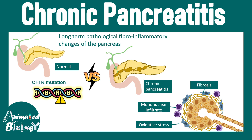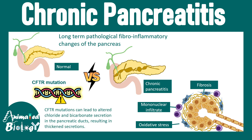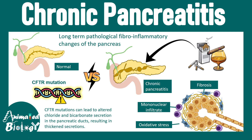There are also genetic components underlying chronic pancreatitis. One of the most common factors is the CFTR gene mutation. CFTR mutation can lead to altered chloride and bicarbonate secretion into the pancreatic ducts, resulting in pancreatic secretion that is more thickened and can obstruct the pancreatic ducts. One of the most common reasons for chronic pancreatitis is long-term exposure to alcohol and cigarette smoke.